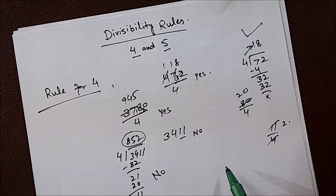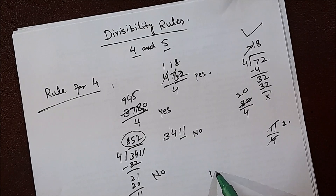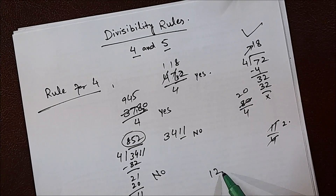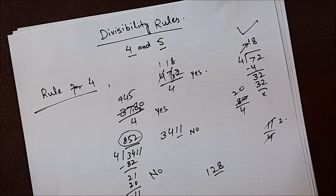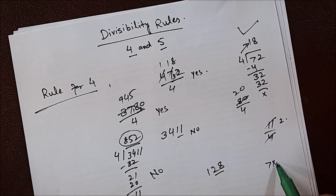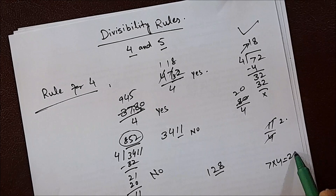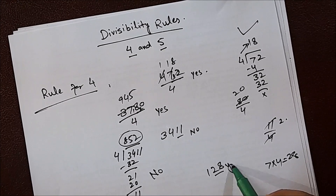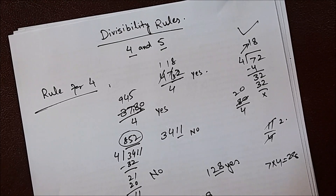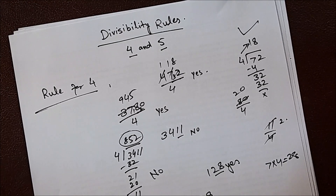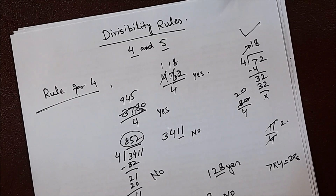Any other small numbers — suppose 128 and 129. We will see the unit and tens of each number. For 128, the last two digits are 28: 7 times 4 are 28, so yes, this number is divisible by 4. For 129, the last two digits are 29, which is not divisible by 4, so the whole number is not divisible by 4. Got it?